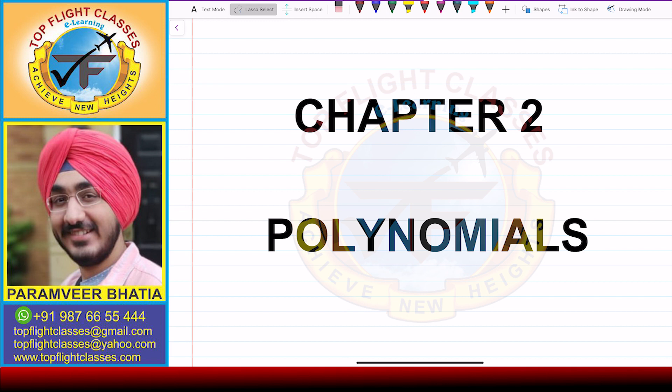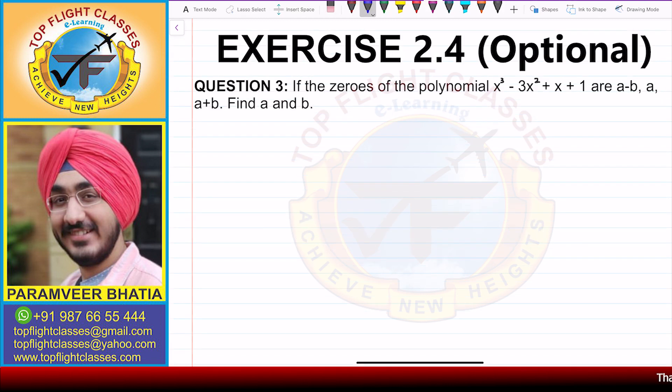Hey guys, welcome to my channel Top Flight Classes. In this video we will cover question number 3 of Exercise 2.4, which is the optional exercise. The question says: if the zeros of the polynomial x³ - 3x² + x + 1 are a-b, a, and a+b, find a and b.